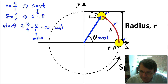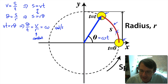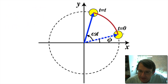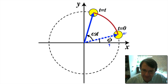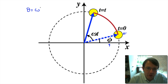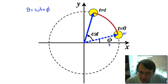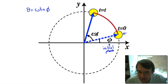Supposing instead of starting timing when the object crossed the x-axis, we took it at some arbitrary other point around the circle. In that case, our initial position is not on the x-axis — it's at some angle phi from the positive x-axis. This angle phi is what we call our initial phase. We still increase at a rate of omega t, since the angular velocity is constant and equal to omega. So the total phase is θ = ωt + φ.